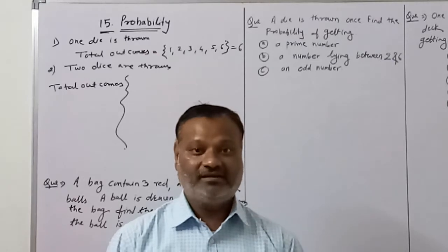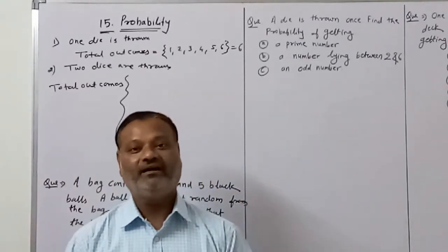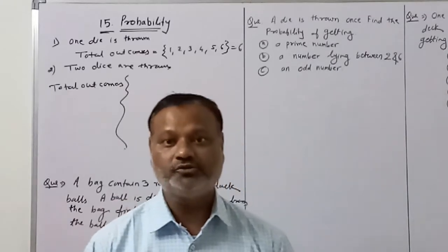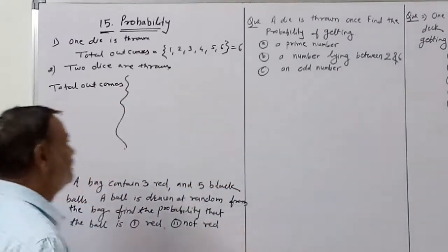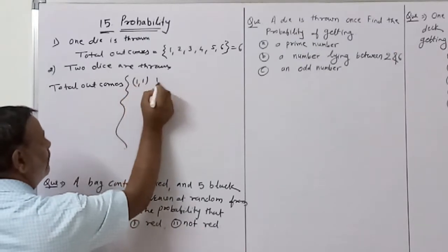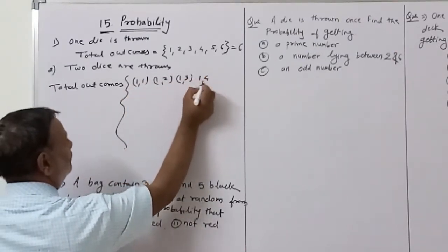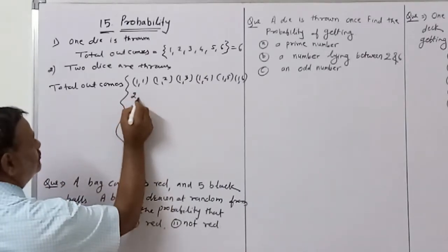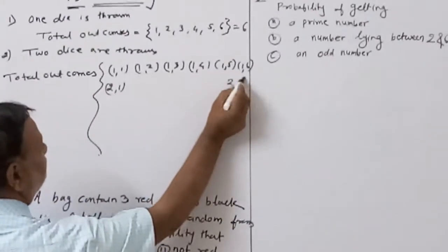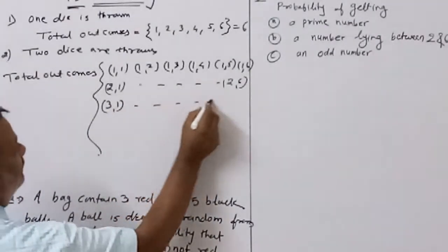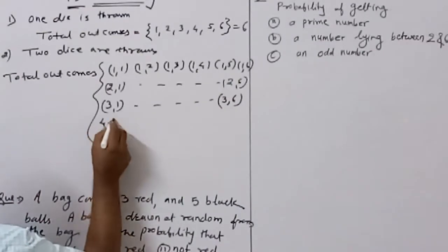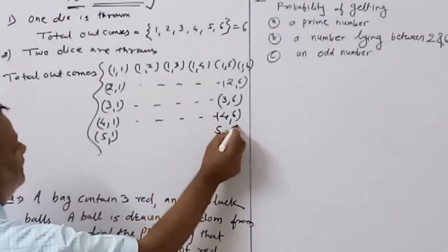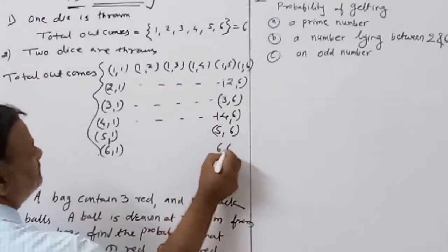For the first die, we write: (1,1), (1,2), (1,3), (1,4), (1,5), (1,6). Similarly for second die: (2,1) through (2,6). Then (3,1) through (3,6), (4,1) through (4,6), (5,1) through (5,6), and (6,1) through (6,6). These are the numbers on the uppermost face of each die.